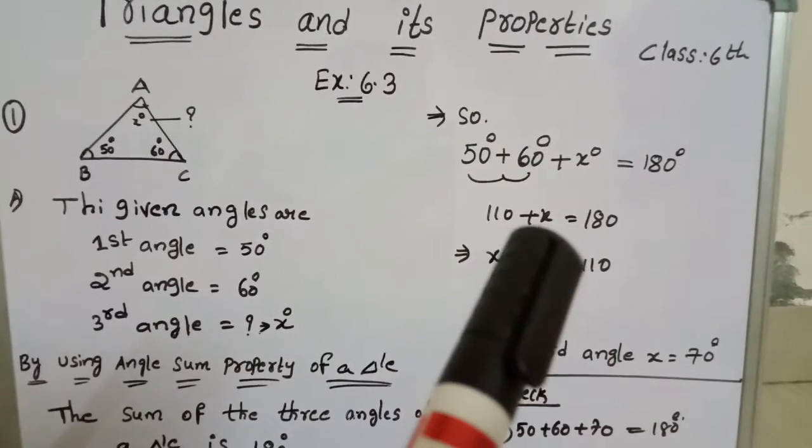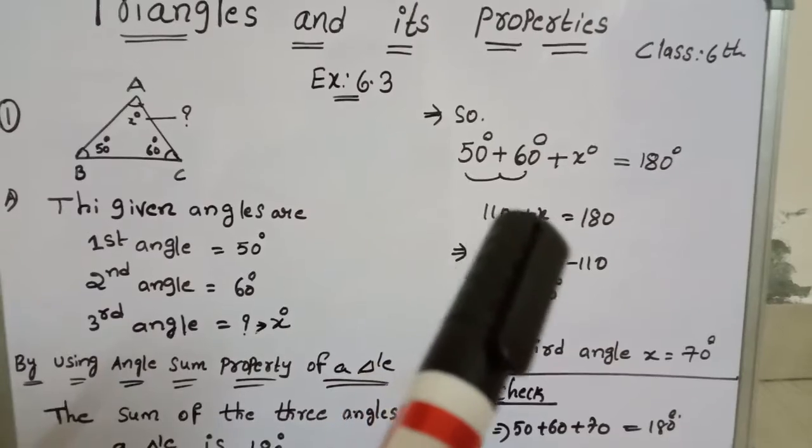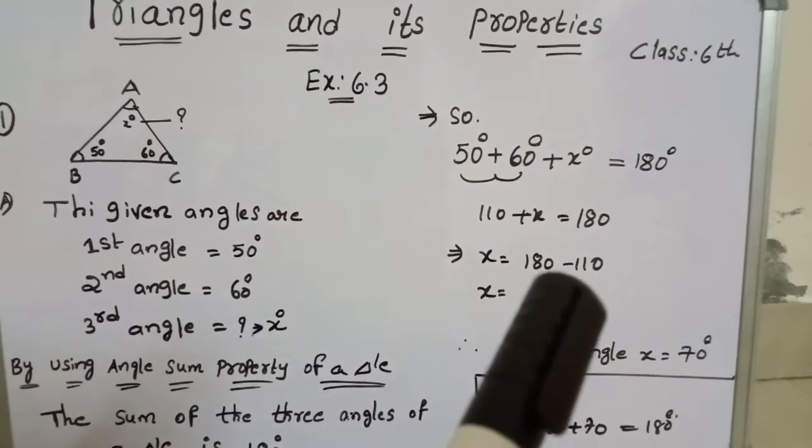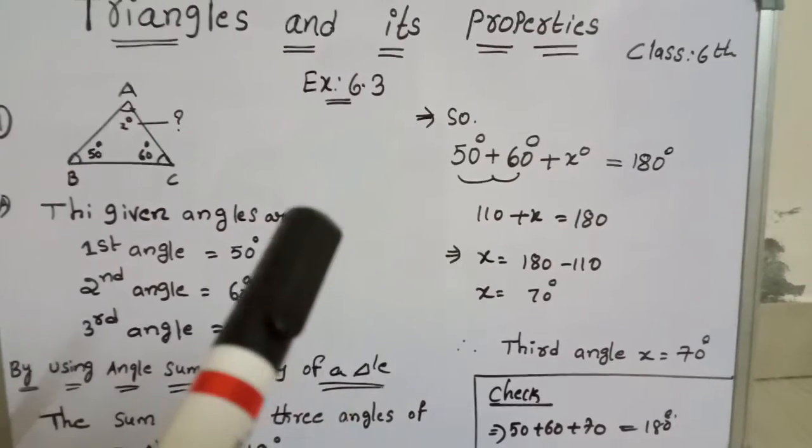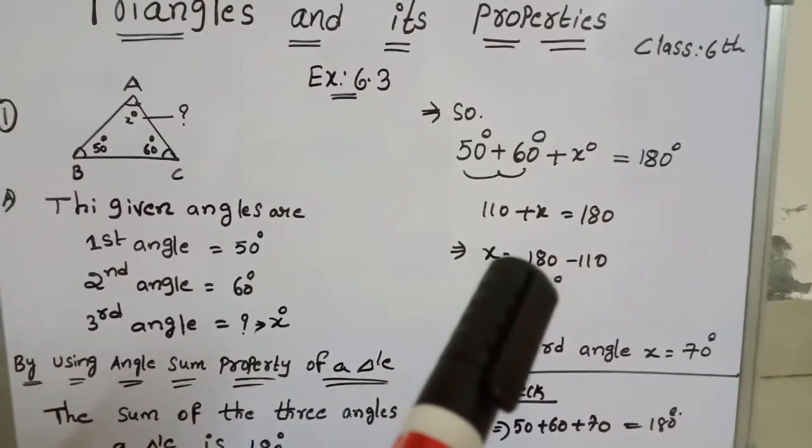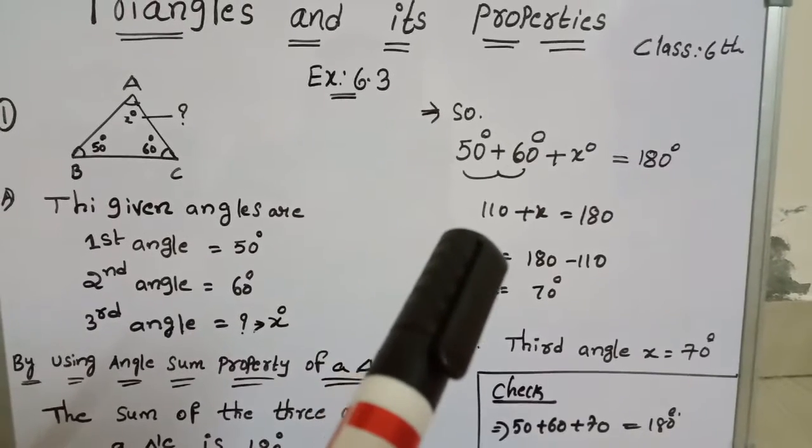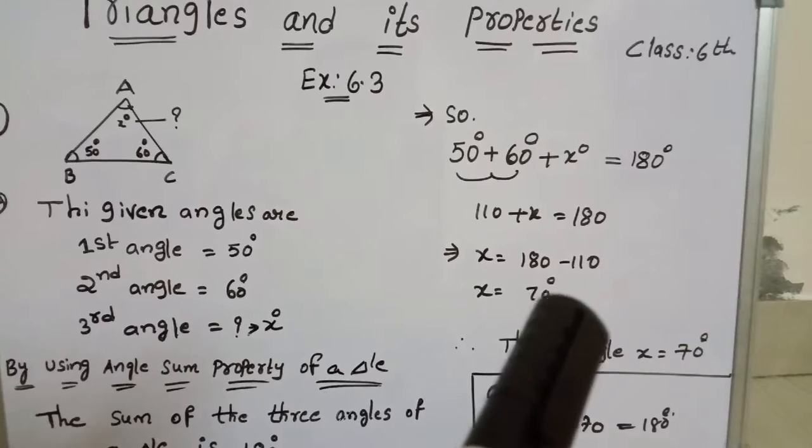Here we have to find this X value. So keep X on one side and all remaining numerical values on one side. So X equal to 180 minus 110. Actually it is plus 110, but if we move any value from LHS to RHS the signs are changed. So it becomes minus 110.